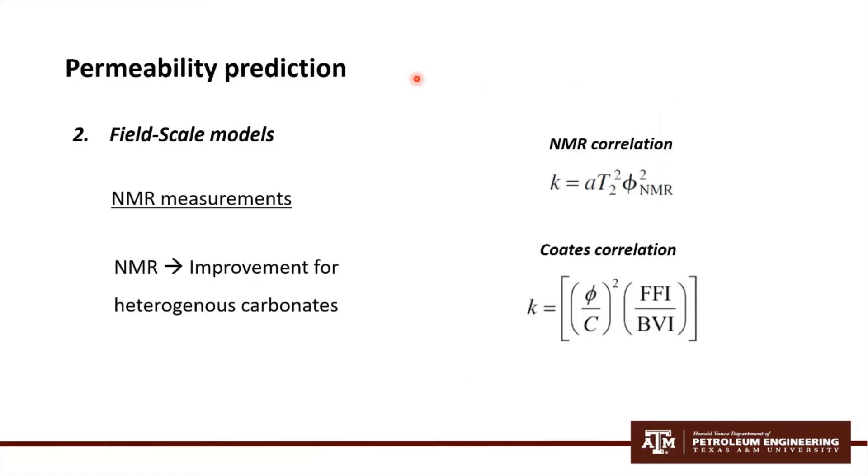So now I'm going to turn to NMR data, since it is widely used for permeability estimations. The most important aspect of it is that this was a major improvement for heterogeneous carbonates characterization, because T2, which is here the relaxation time, relates the surface-to-volume ratio of the pore system with permeability.